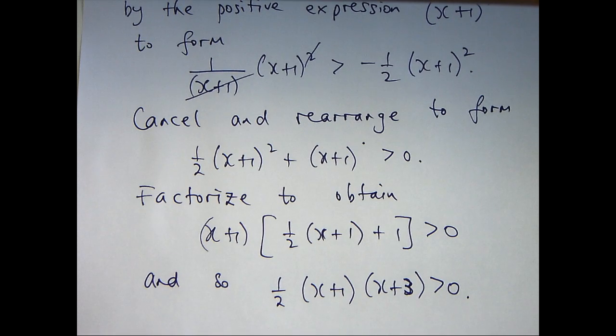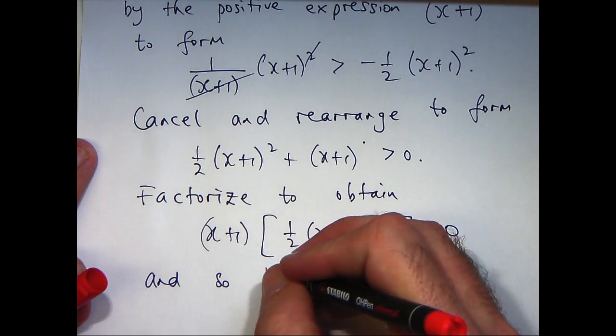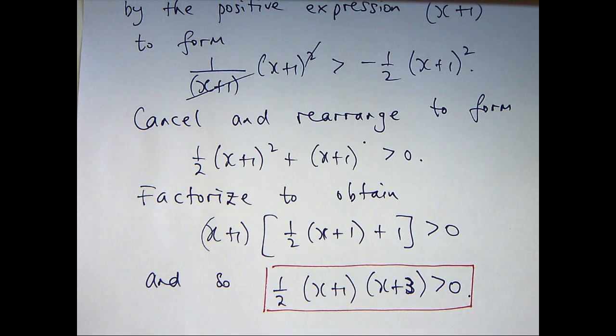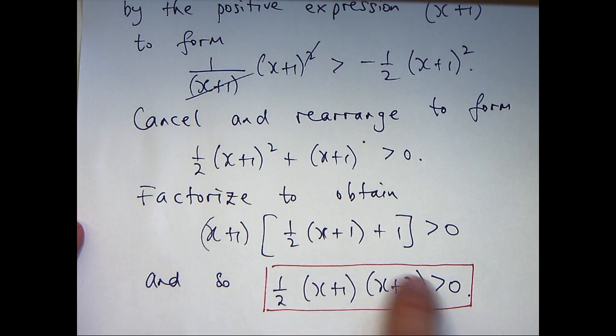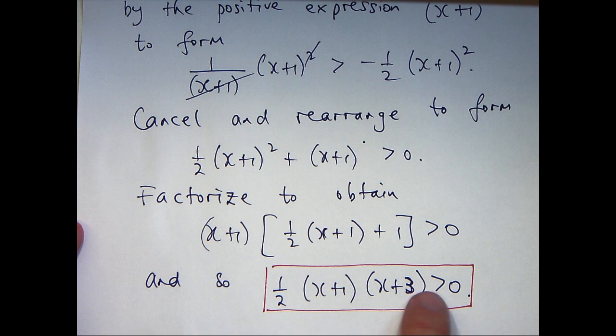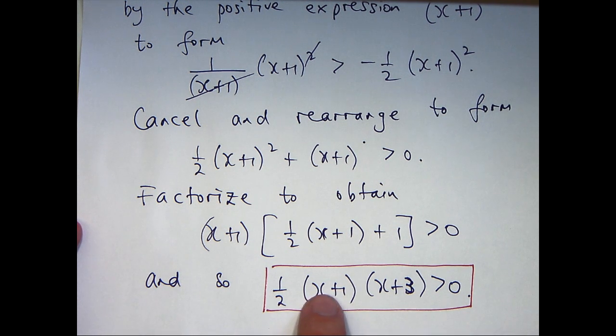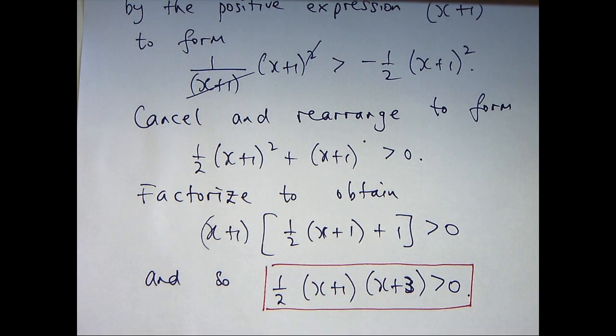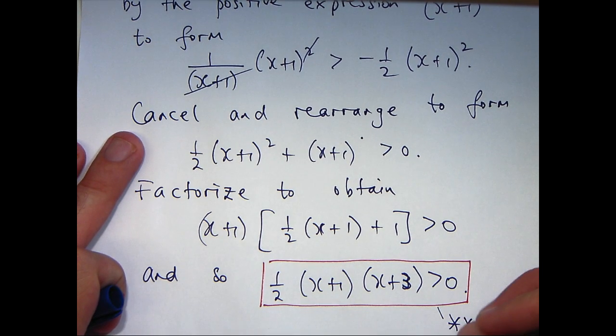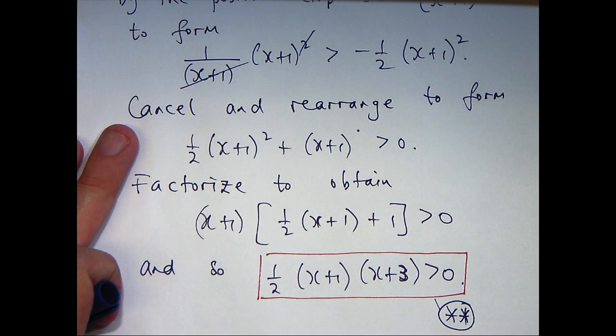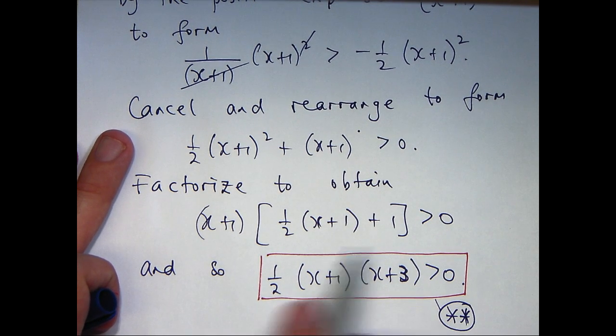Okay, so we've now reached the stage where the original difficult inequality is simplified. How's it made simpler? Well, you'll notice the left hand side is just a quadratic. Okay, so it's going to be some sort of parabola. Okay, so what we can do now is label this double star and solve this.